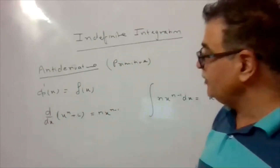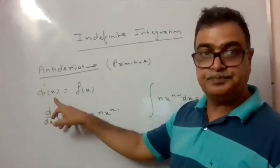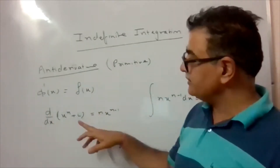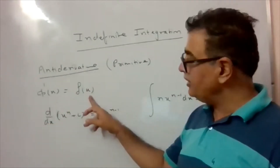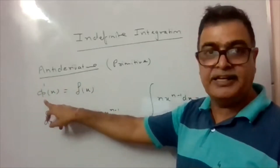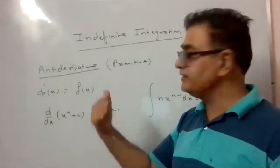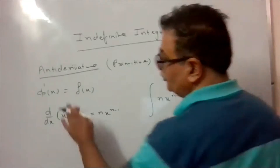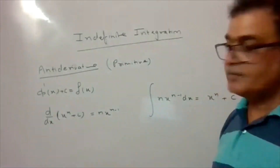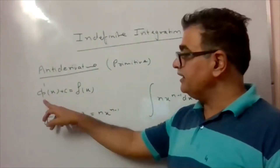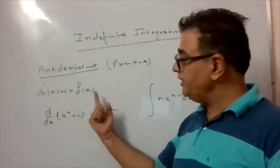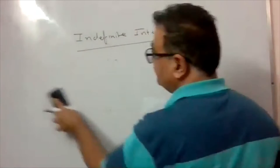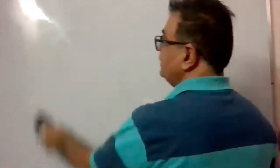So in summary: phi dash x is f(x), meaning the derivative of phi(x) is f(x), and the antiderivative of f(x) is phi(x). Integration of f(x) gives phi(x) + C. Using these results we will generate the standard formulas we are going to use in integration.